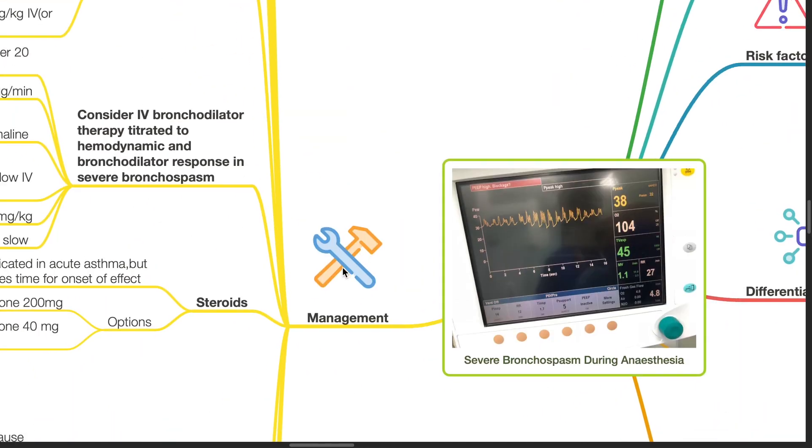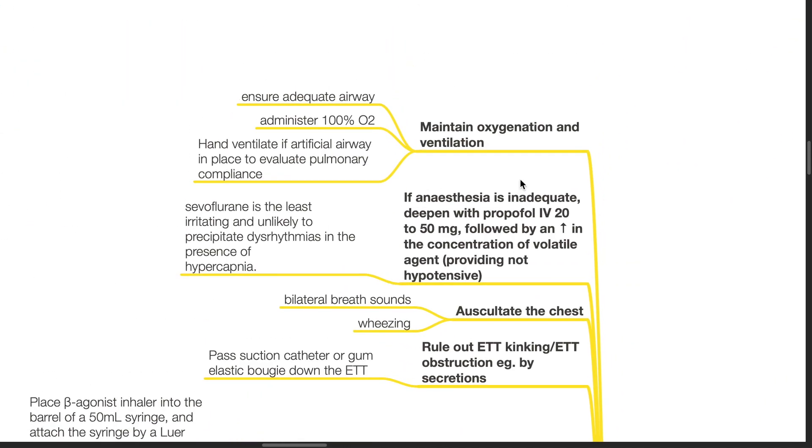Management: Maintain oxygenation and ventilation. Ensure adequate airway. Administer 100% oxygen. Hand ventilate if artificial airway is in place to evaluate pulmonary compliance. If anesthesia is inadequate, deepen with propofol IV 20-50mg followed by an increase in the concentration of the volatile agent, provided that the patient is not hypotensive. Sevoflurane is the least irritating and unlikely to precipitate dysrhythmias in the presence of hypercapnia.